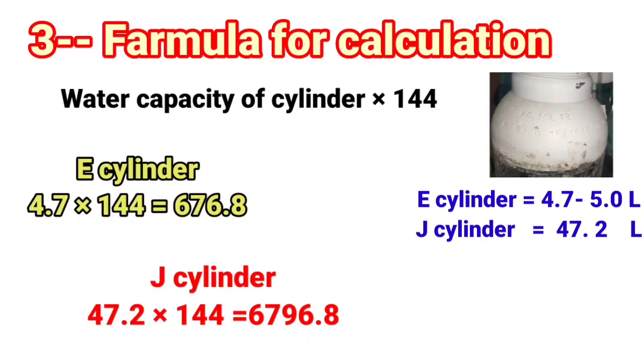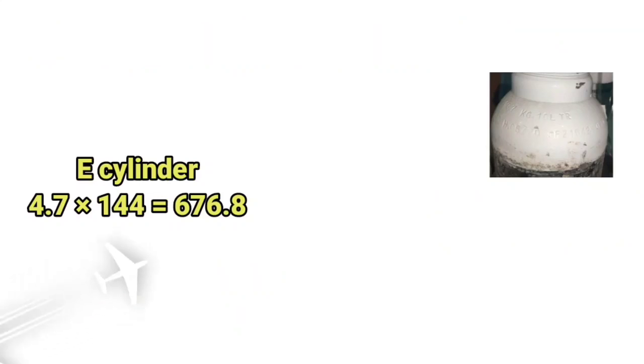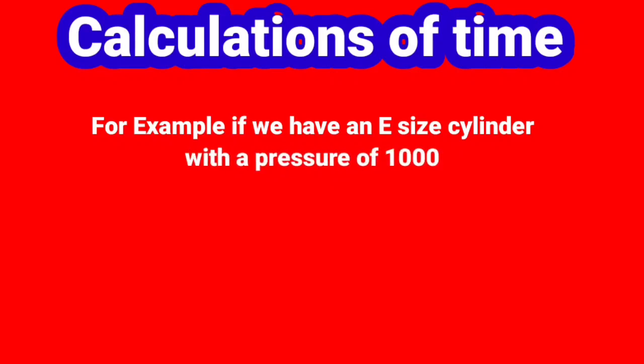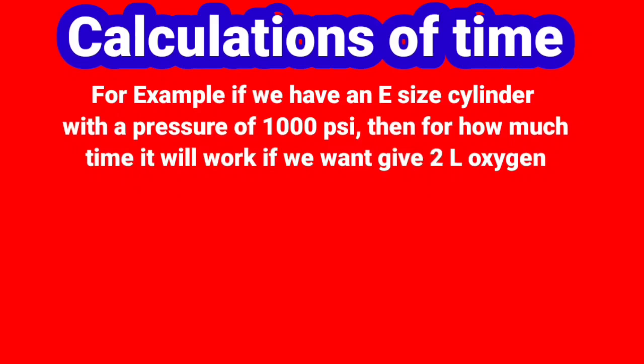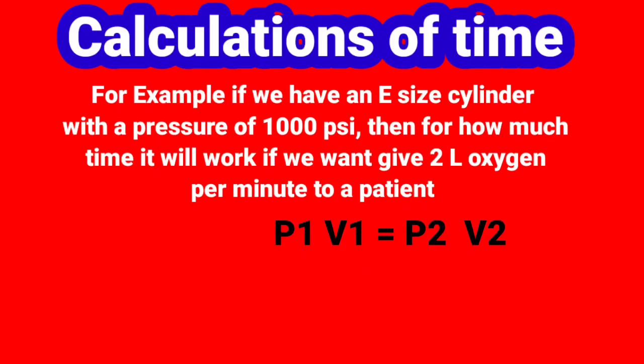Calculation of time. For example, if we have an E-size cylinder with a pressure of 1000 psi, then for how much time it will work if we want to give 2 liters oxygen per minute to a patient? To calculate the duration of time, first we need to find the volume of cylinder. For that we will use Boyle's formula or other two I have explained already.